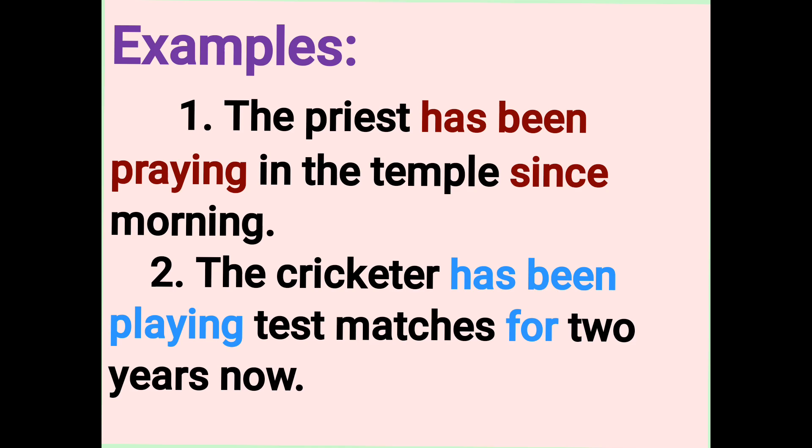Second example: The cricketer has been playing test matches for 2 years now. The cricketer started 2 years ago and has been playing test matches. If this continues to the present time, when will it be finished? It is not yet complete — that is the present perfect continuous tense.